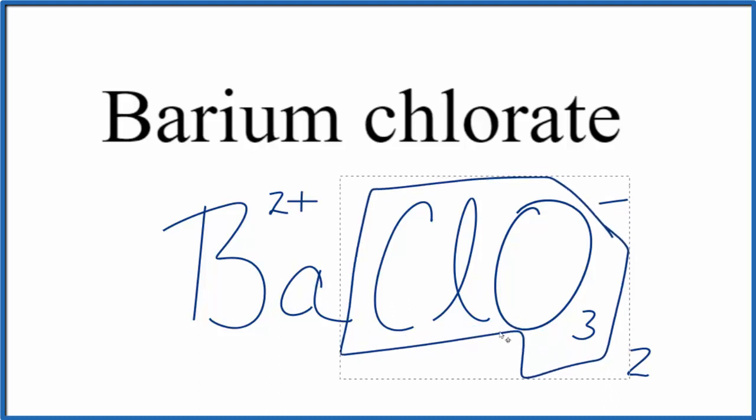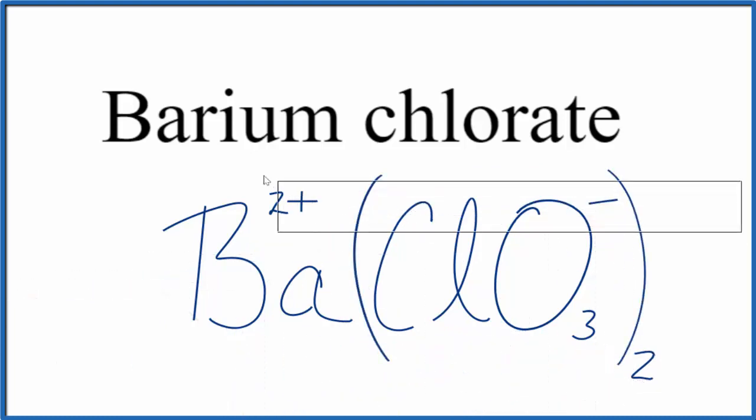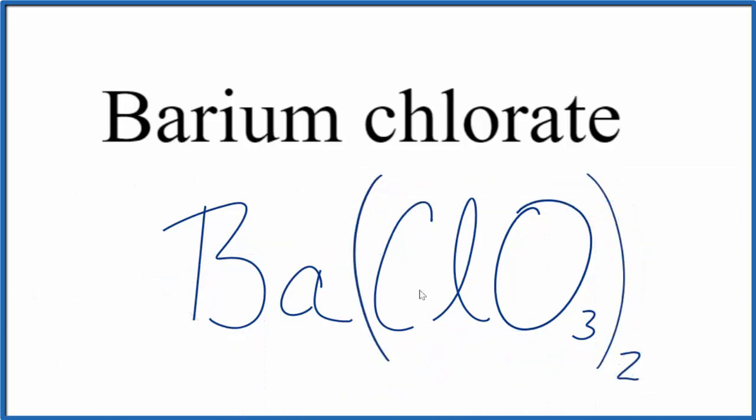And we need to replace this here with parentheses, since we do have 2 separate chlorate ions. Then get rid of these symbols. And this is the formula for barium chlorate, Ba(ClO3)2. This is Dr. B, and thanks for watching.